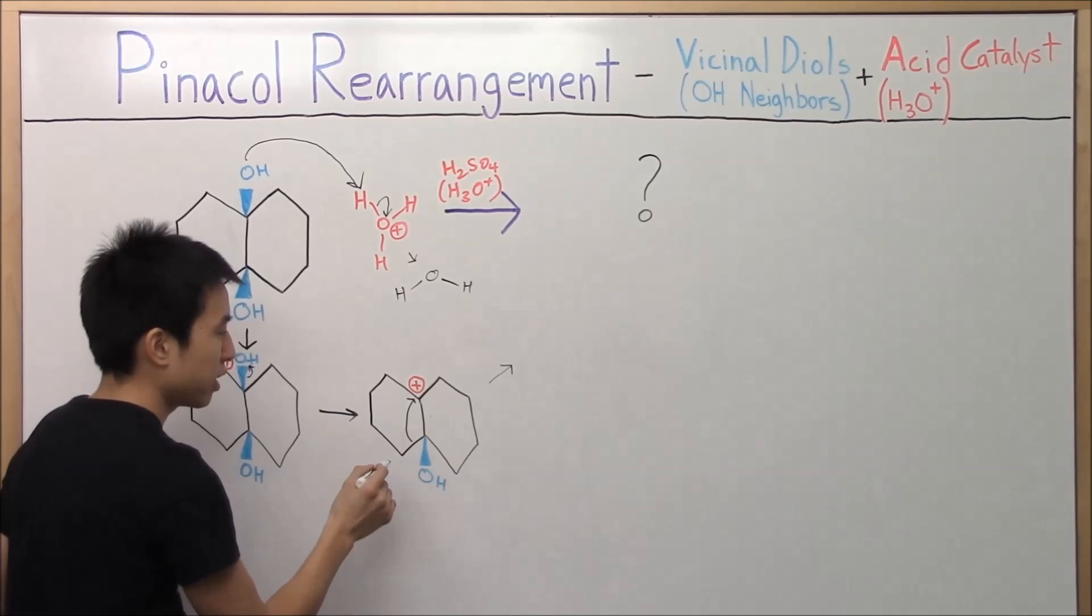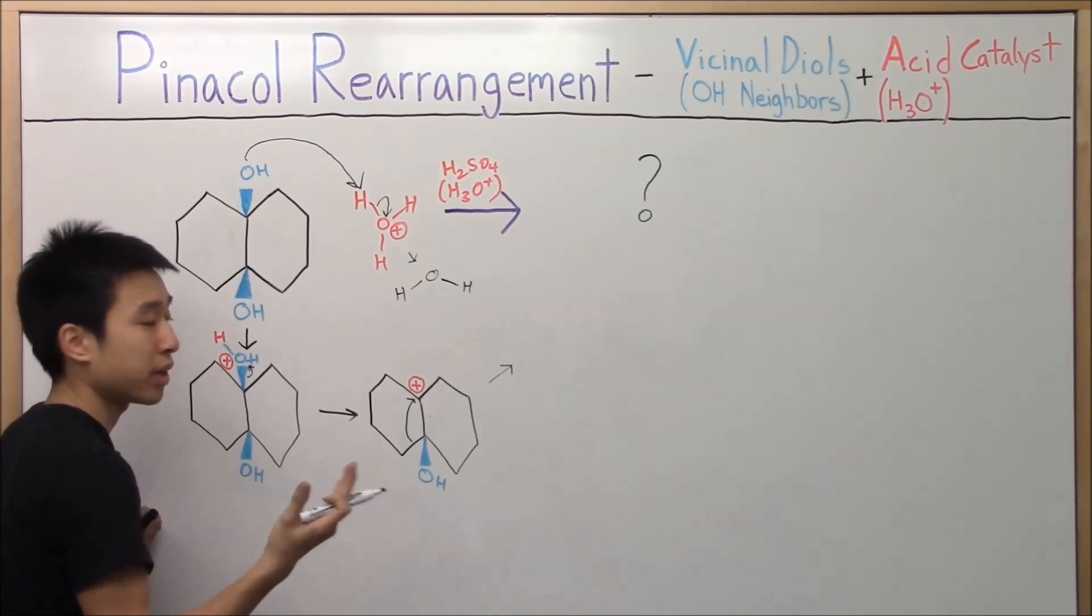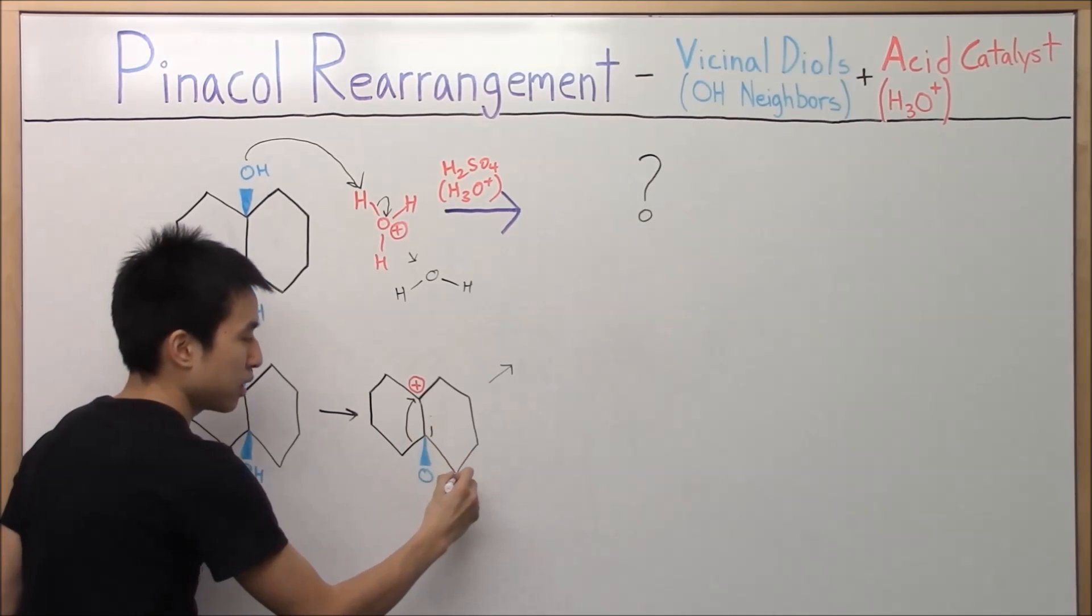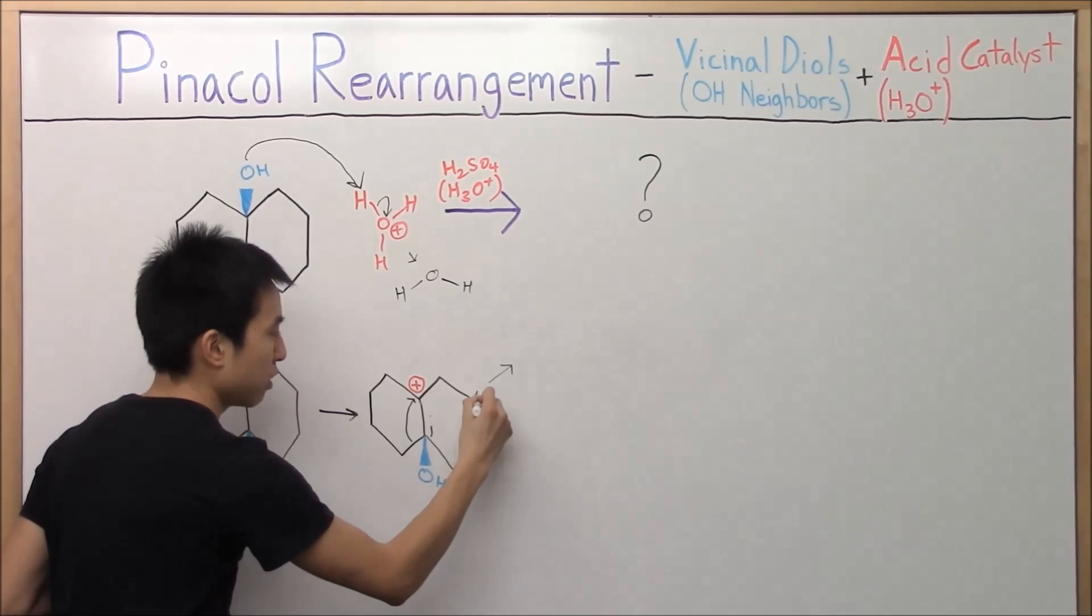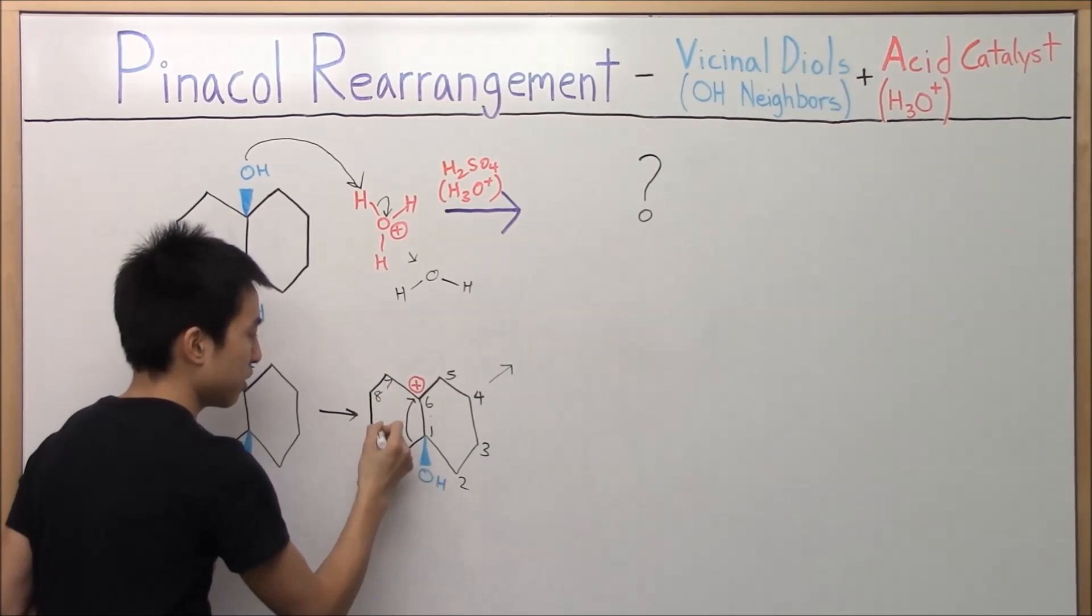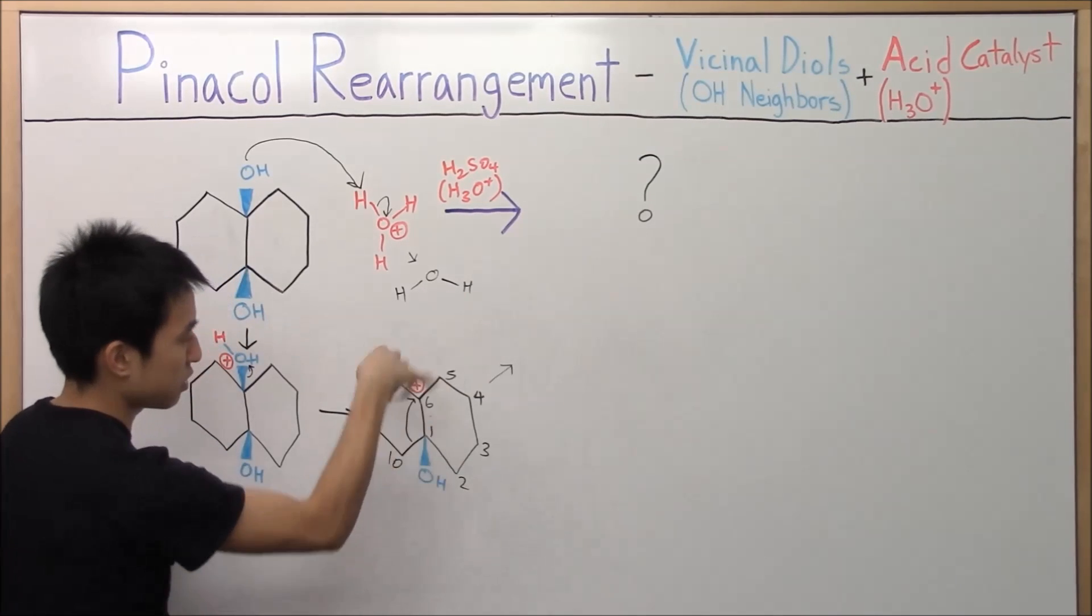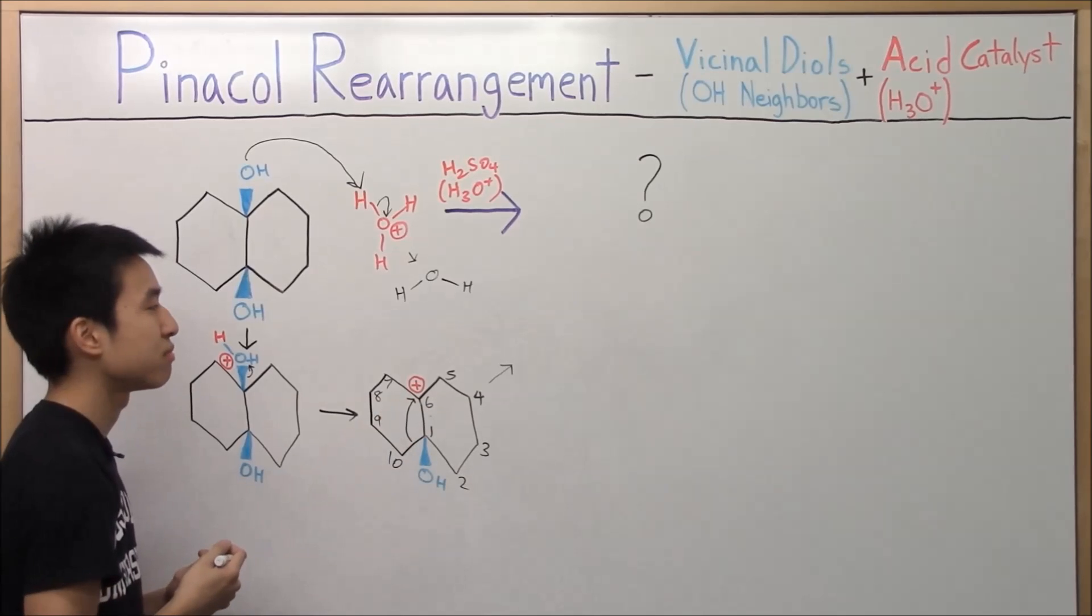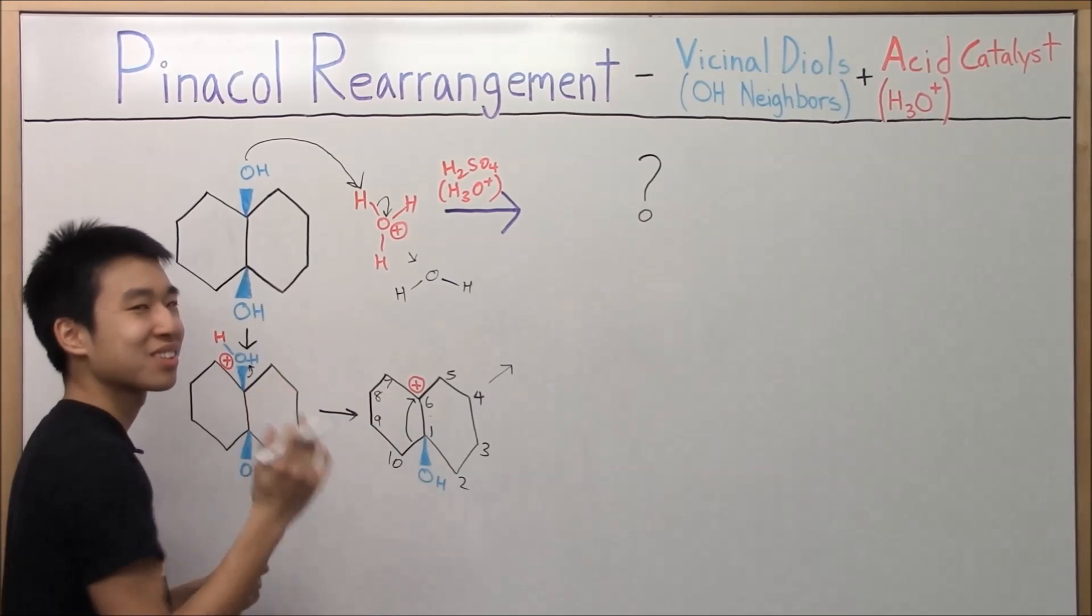So at this point here, whenever you screw around with the ring, I would recommend you guys to number your carbons so you don't lose any. One, two, three, four, five, six, seven, eight, nine, ten. Okay, we have ten carbons in total. So redraw that. It's going to be kind of crazy, but just do your best. If you can do this, then yeah. Try it out.